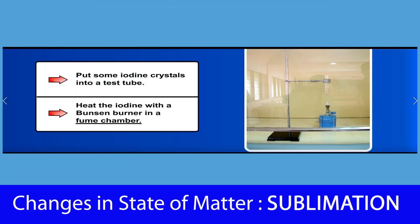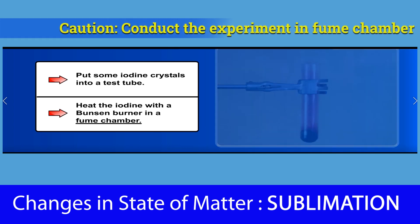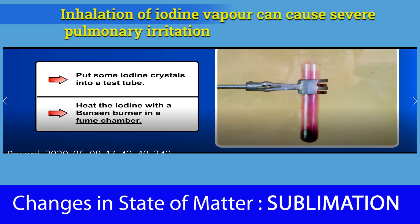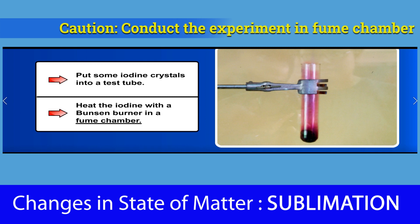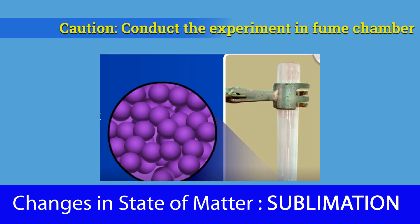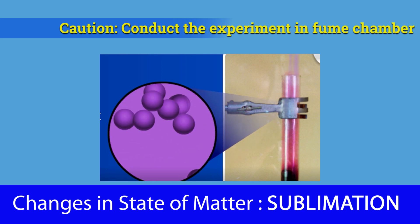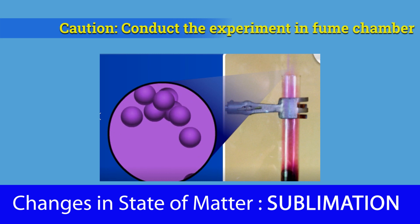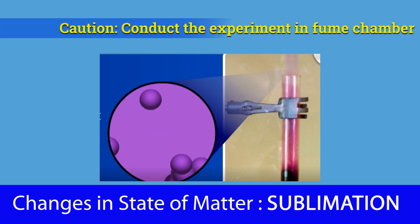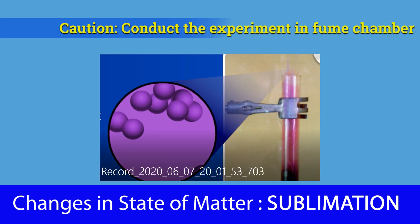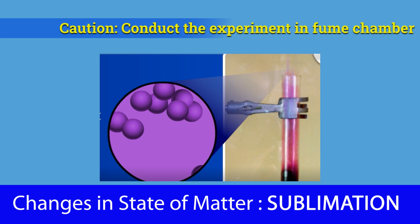To investigate sublimation, let's look at this activity: put some iodine crystals into a test tube and heat the iodine with a Bunsen burner in a fume chamber. When heated, the particles of iodine absorb heat energy. With more energy, the particles break loose from their positions and move randomly at higher speed. As a result, the iodine crystals change to purple vapor — the solid changes directly to its gaseous state without going through the liquid phase. This is sublimation.